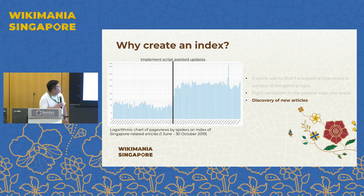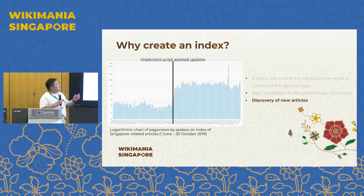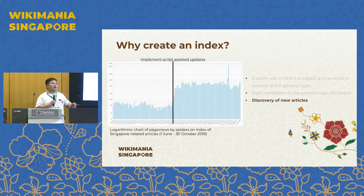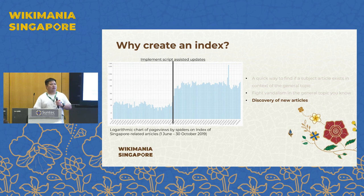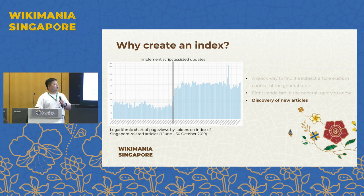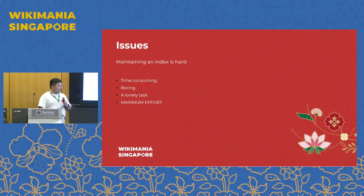This chart shows the period from 1st June to 31st October 2019. Around August is when I ran the script to programmatically create the index. The chart shows spider visits — meaning Google bot crawlers, Bing, and all your search engines. Before that, we were only being visited about 50 times per day by bot traffic. After updating the index, we saw much more bot traffic coming in because it was getting updated much more frequently, making it easier for search engines to discover new articles.